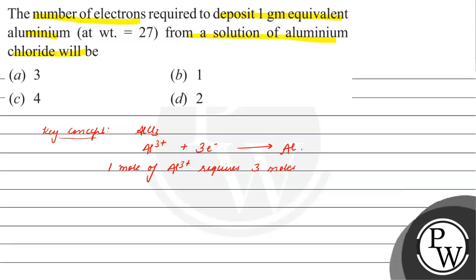For one gram equivalent aluminum that reduces, one gram equivalent aluminum requires a certain number of electrons or moles. One gram equivalent of aluminum...